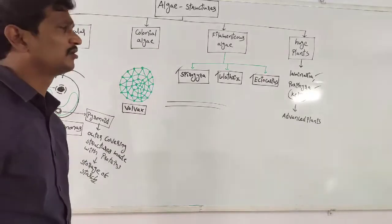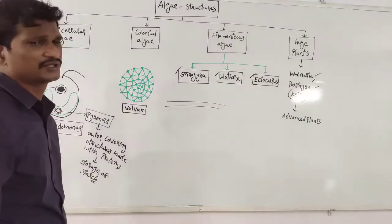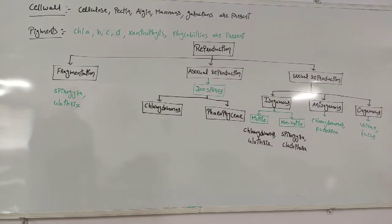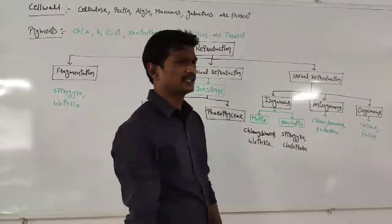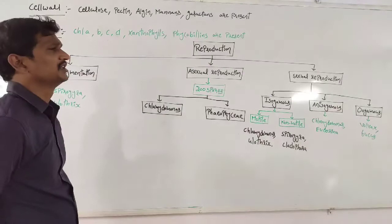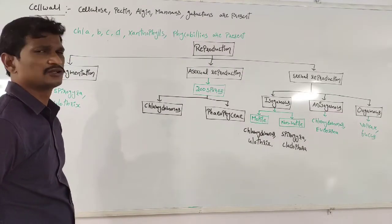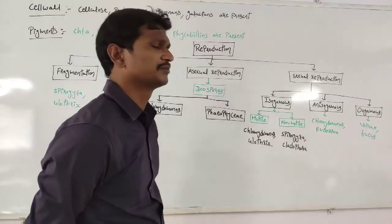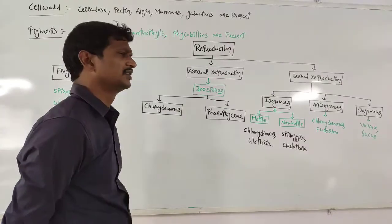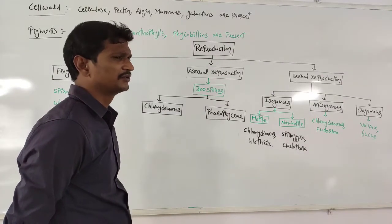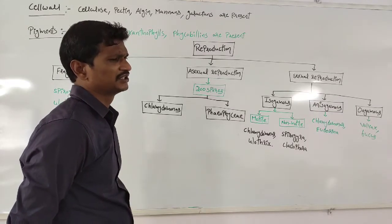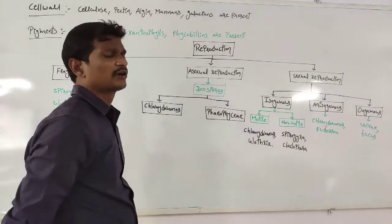Next we will discuss the chlorophyll elements and cell wall composition. Within algae, there is always a cell wall. In different types of algae and different species, different components are also present. Within Chlorophyceae, one type of cell wall composition is there; within Phaeophyceae, the composition is different. The cell wall content commonly includes cellulose, along with which, in certain cases, algin is present, and in certain cases modified pectin components are also there.